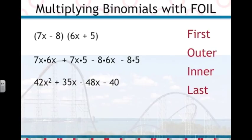So you see we have the result, 42x squared plus 35x minus 48x minus 40. But there are some like terms we can combine. If we combine 35x with the minus 48x, we get negative 13x.